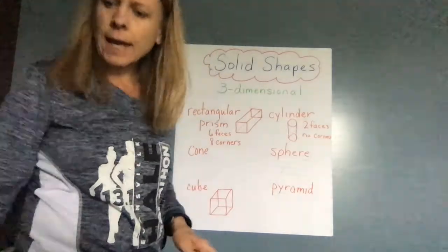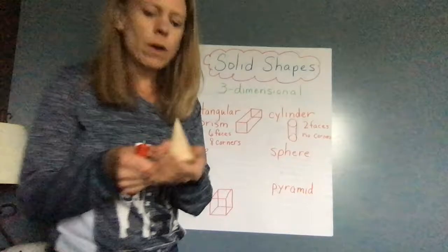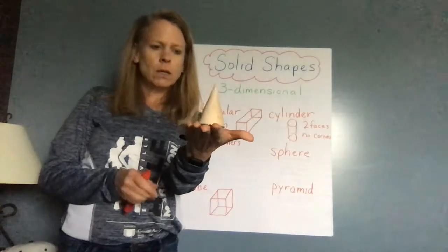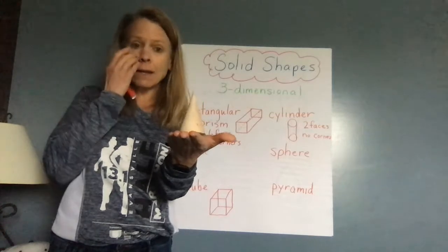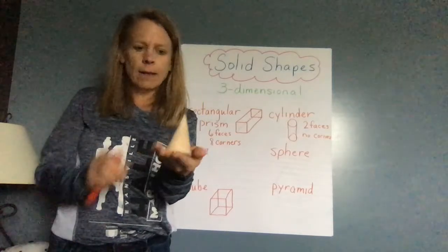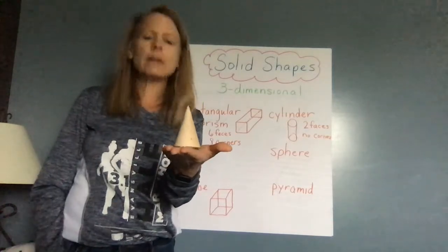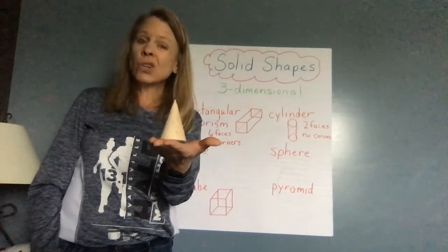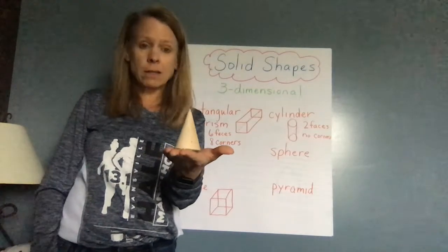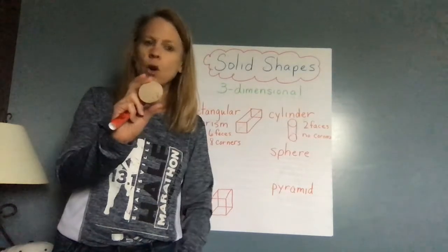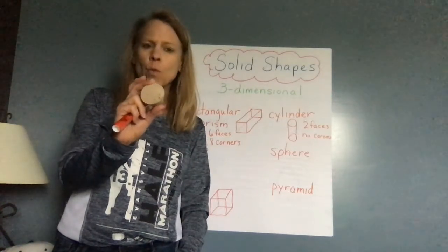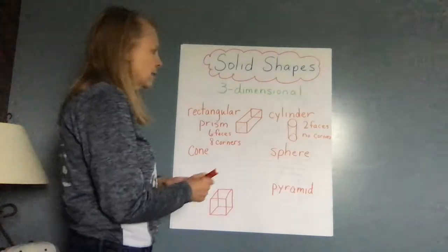The next one is a cone. A cone, when I look at it, reminds me of an ice cream cone, doesn't it? One thing that would be that shape is an ice cream cone. Also, like a party hat. Lots of times a party hat is a cone. A cone only has one face.